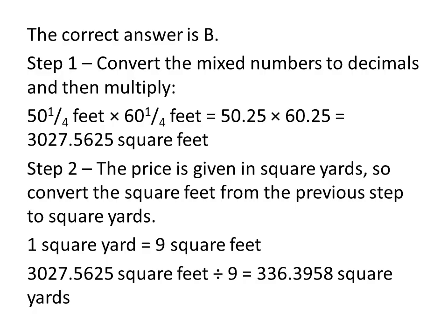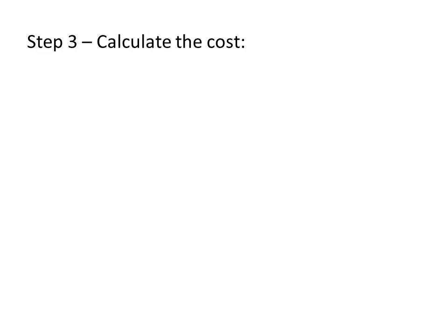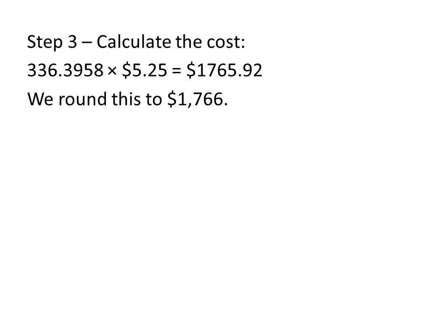For the third step, we need to calculate the cost. Here we have an area of 336.3958 square yards, and our cost of the fertilizer is $5.25 a square yard. So, we need to multiply that out, and we get the answer of $1,765.92, and we can round this to $1,766.